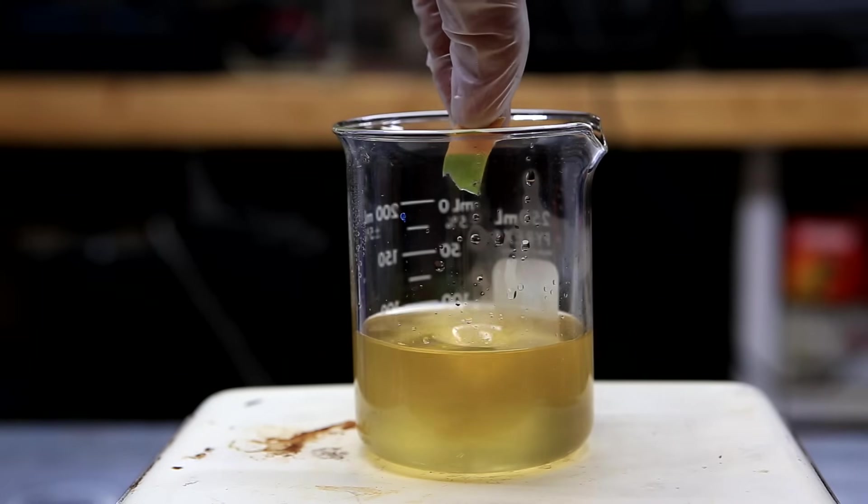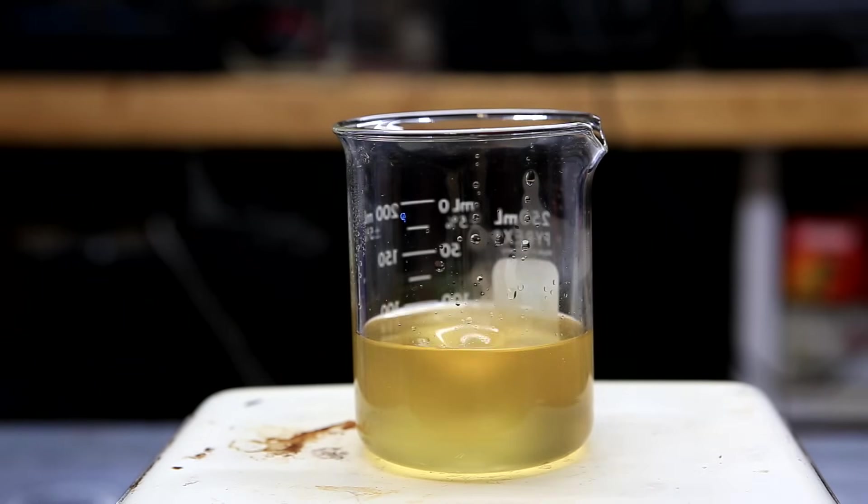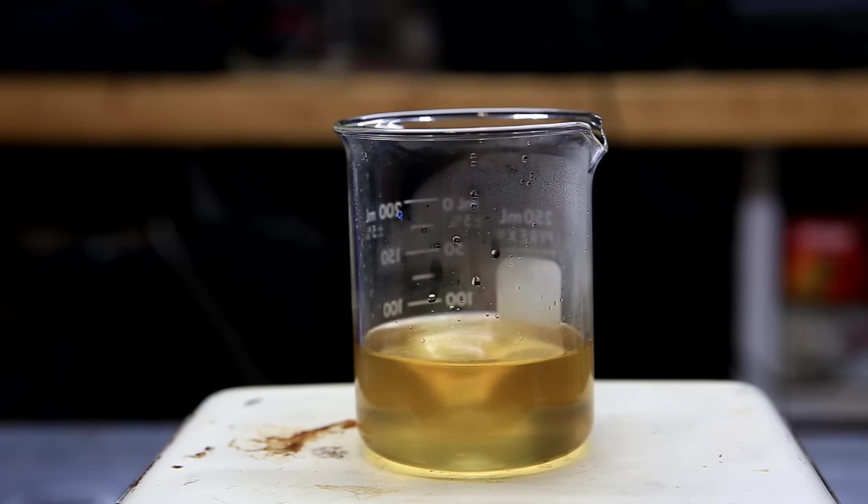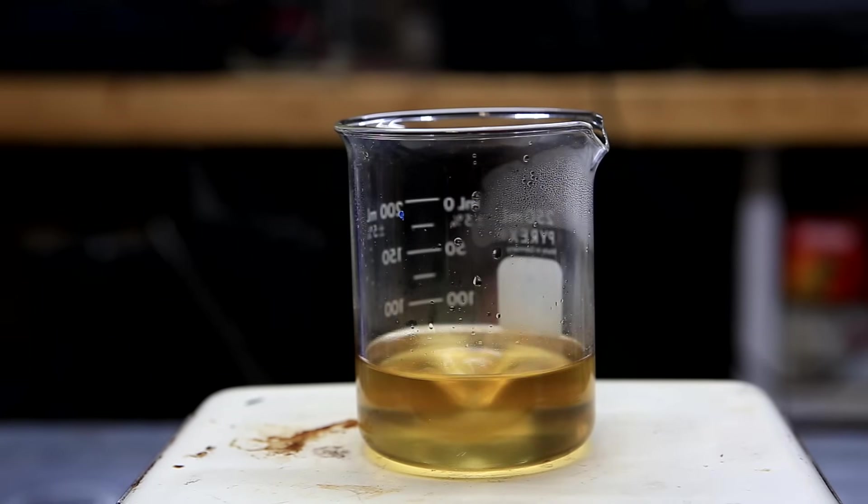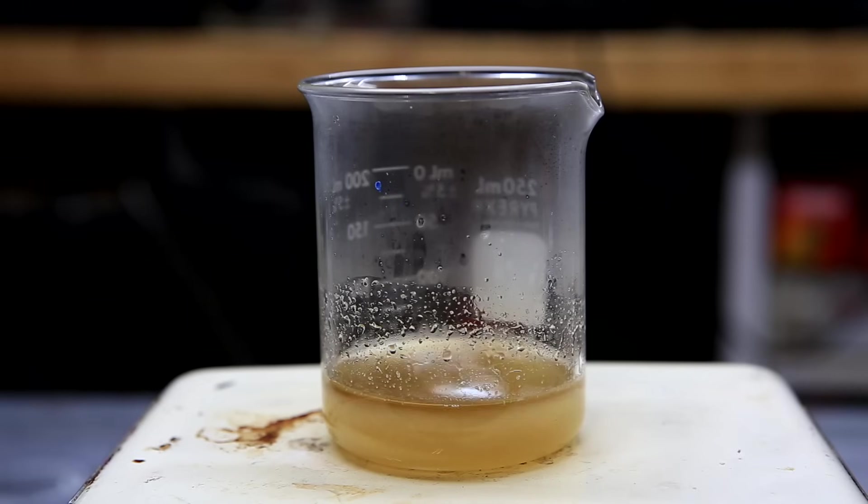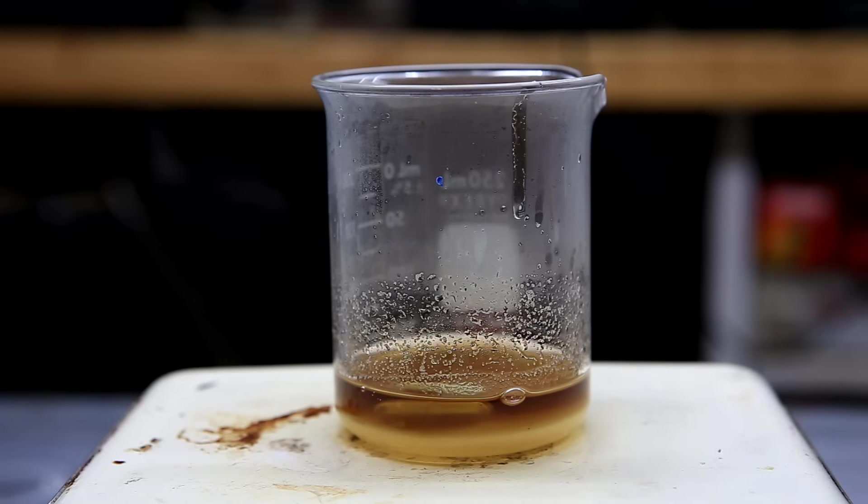The temperature was increased to about 110 degrees Celsius until the solution was reduced to about a third of its volume. As more water evaporates, the solution becomes darker and salt slowly precipitates out. When it reached about one third of its volume, the stirring was stopped and the salt was allowed to settle at the bottom.